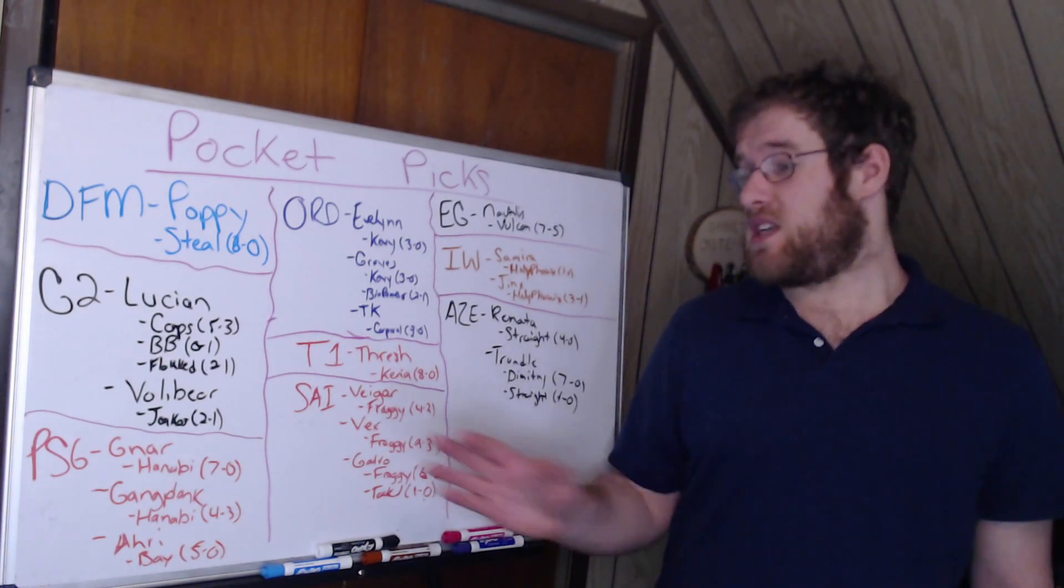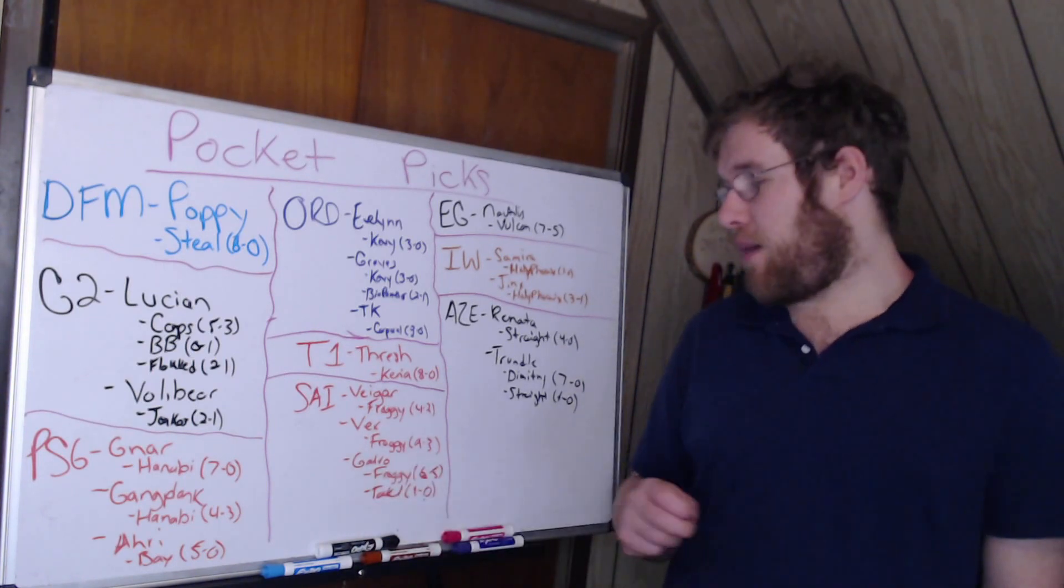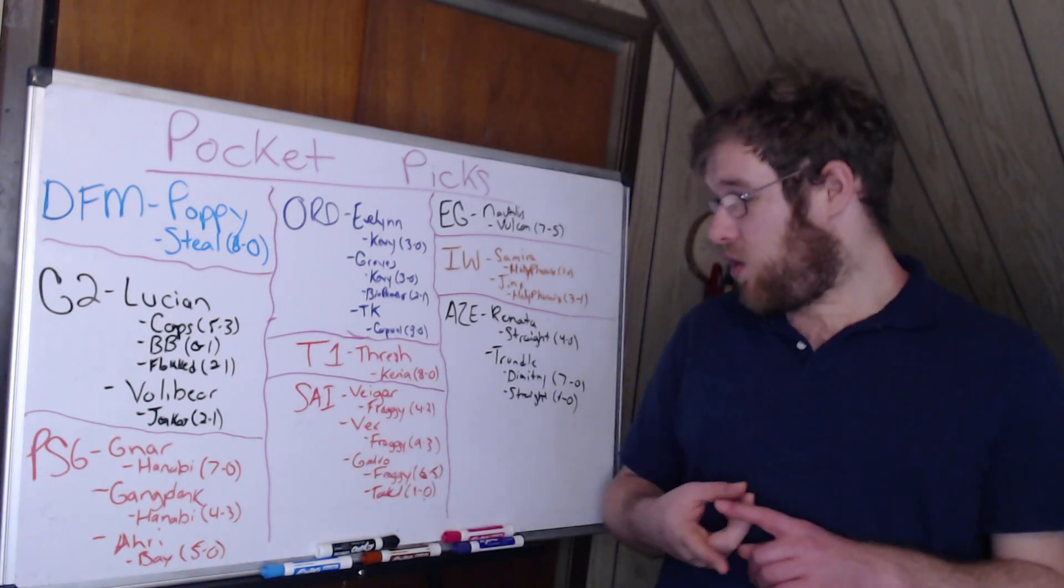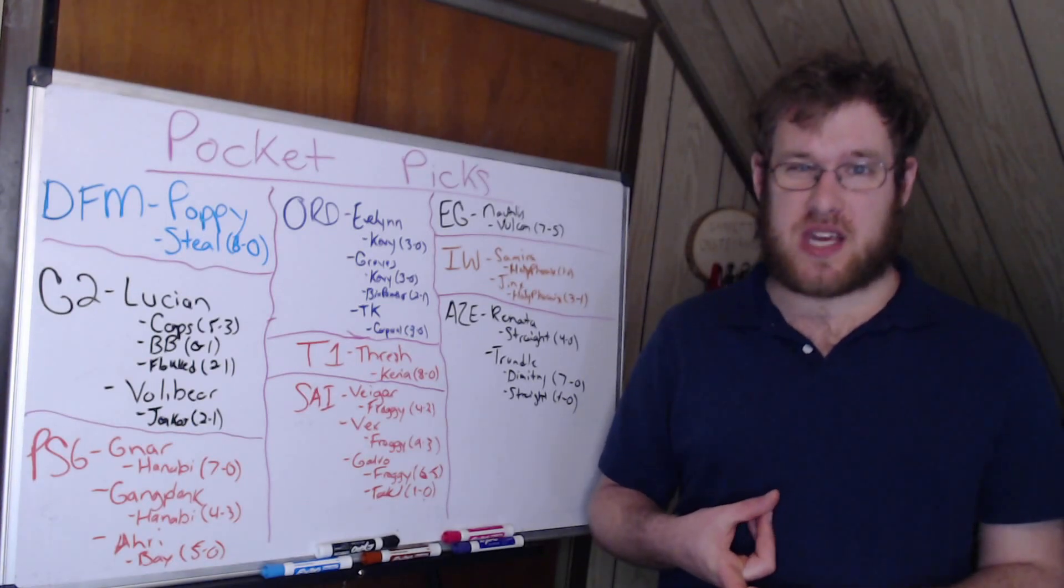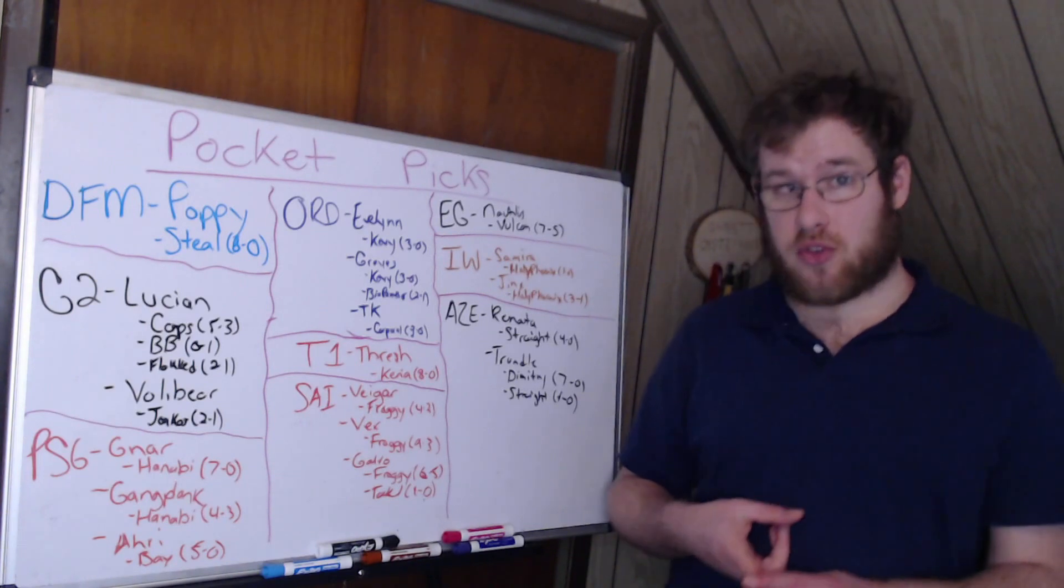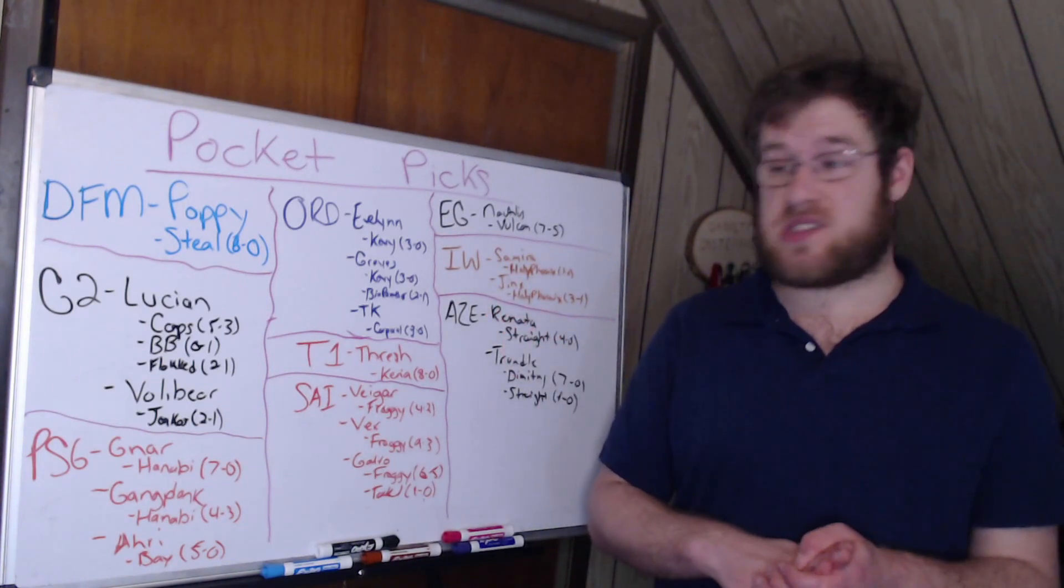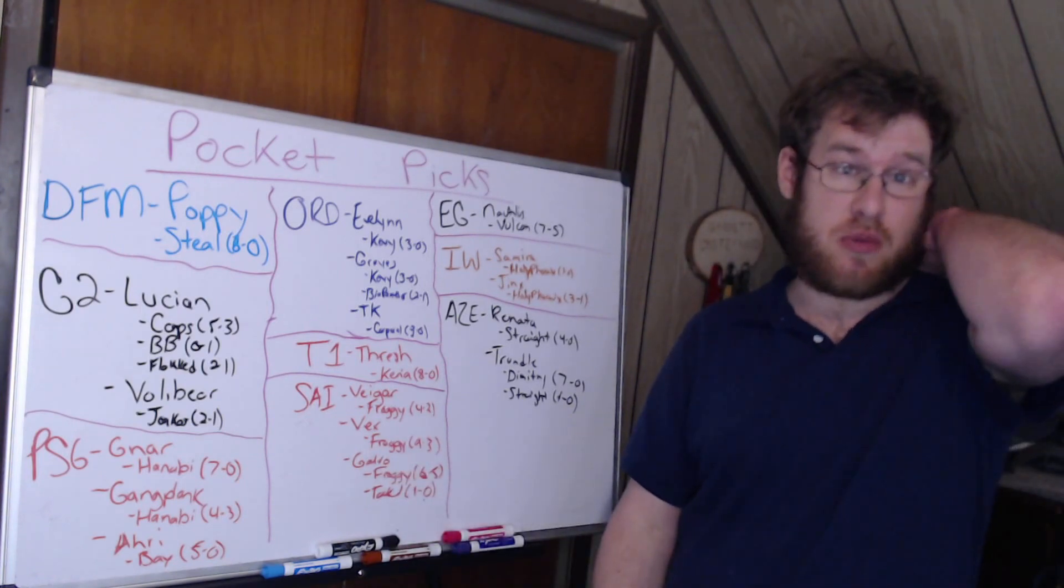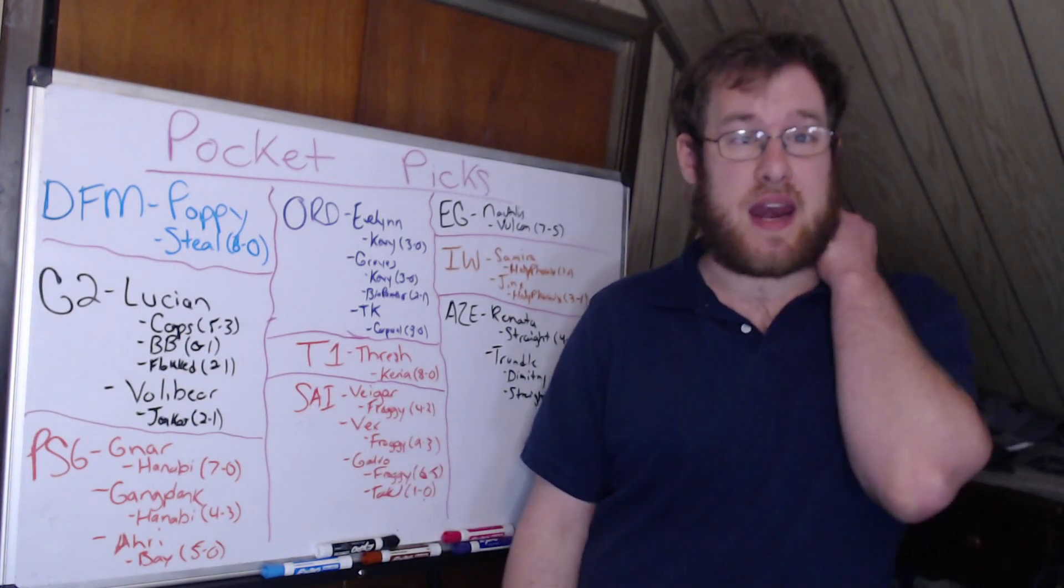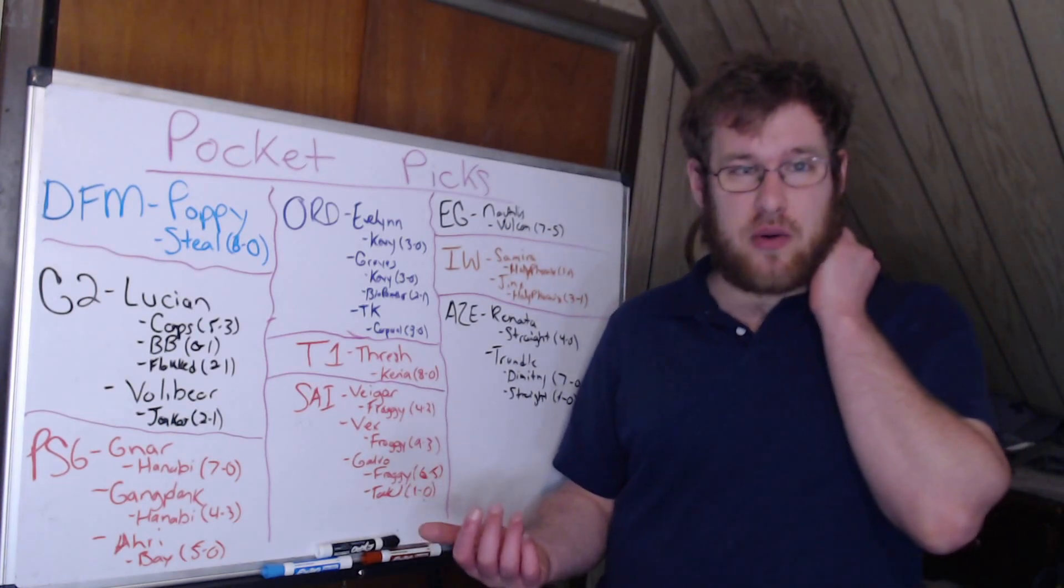Similar to Hanabi with PSG, everything goes through Froggy with Saigon Buffalo. His Veigar was 4-2, highly banned. Anybody else getting Veigar bans like that? No. Vex: 9-3. Everybody was playing Vex, but Vex was being banned against Saigon Buffalo because the other teams were like, he's gonna first pick it, we gotta ban it. The Vex was very, very good for Froggy.